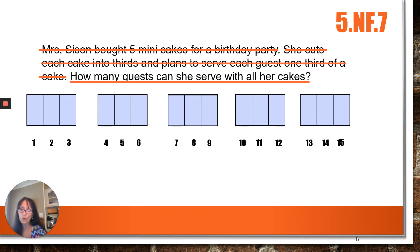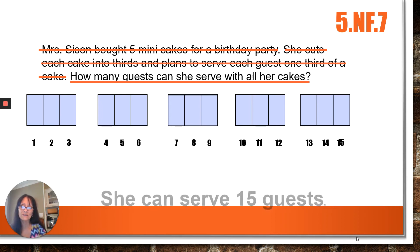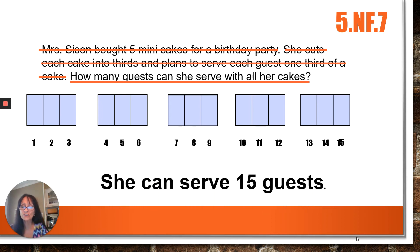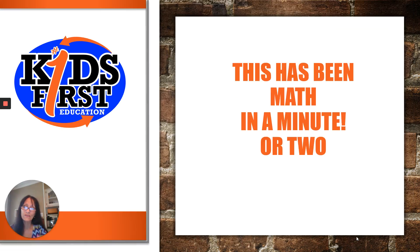Now, since we have a word problem in context, let's answer it with a sentence. She can serve 15 guests. Easy, right? I know — I thought that you would think so.